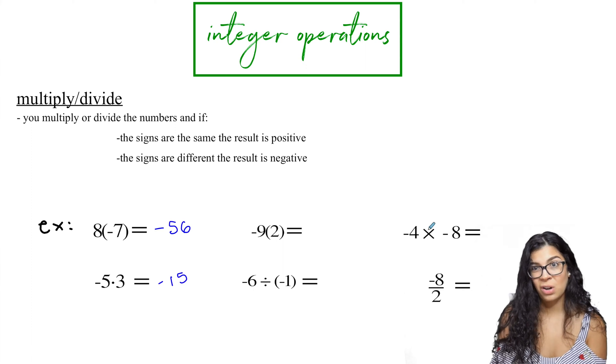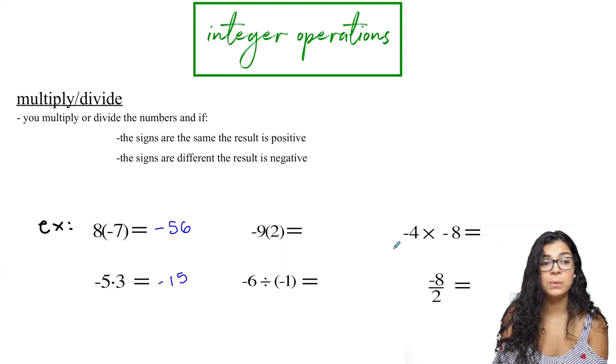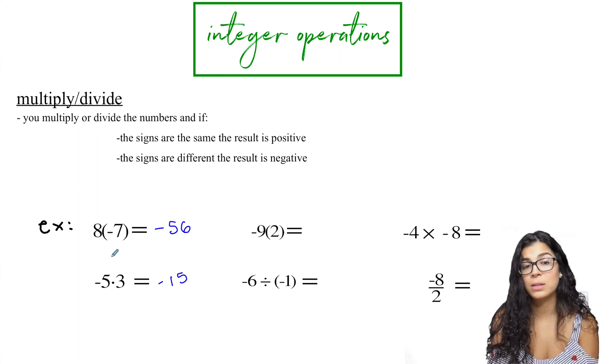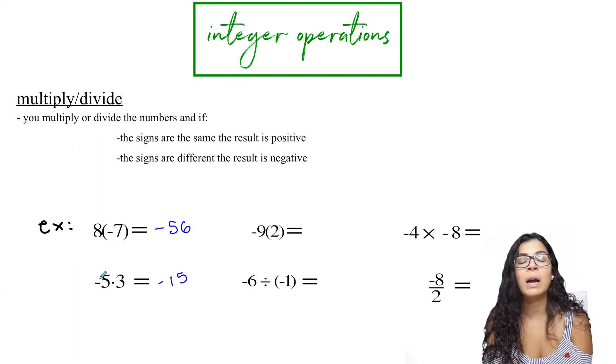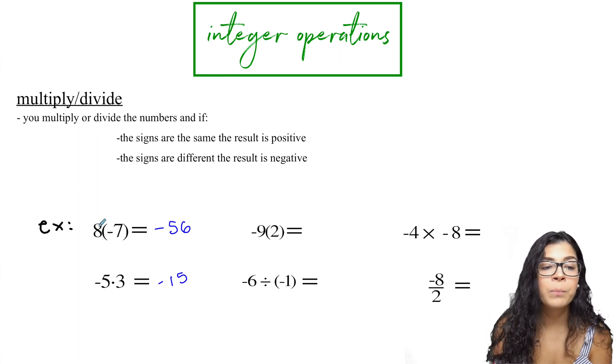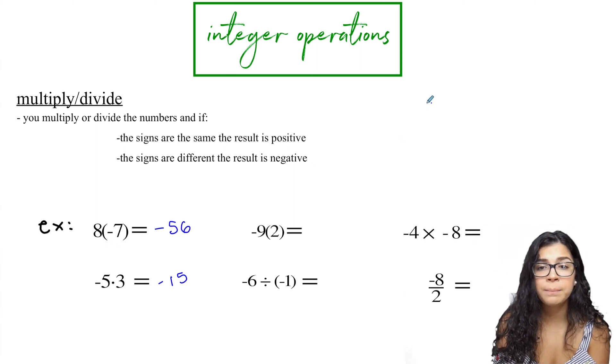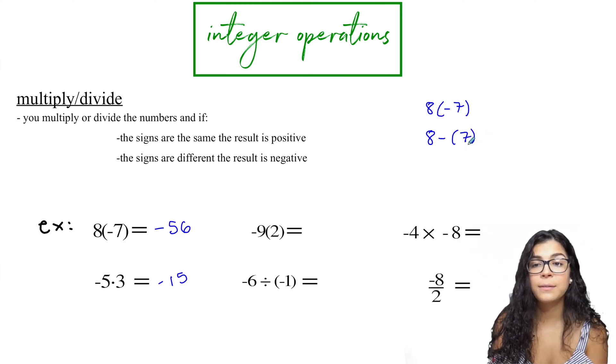Typically you start off with this one and then you move on to like writing it as either a dot or a parentheses is what's more acceptable in higher level math courses. The one thing that I do want to point out about parentheses that students get confused all the time. This is multiplication. That is not the same thing as this.